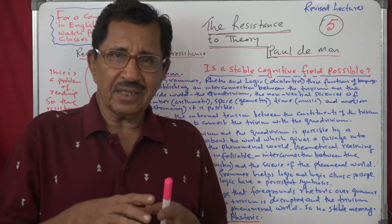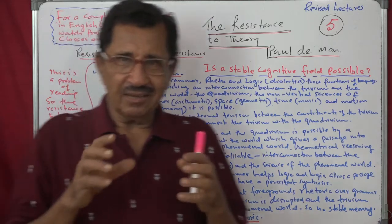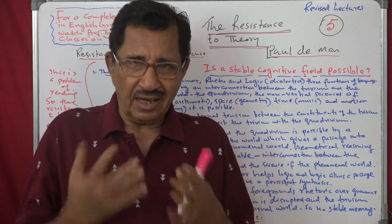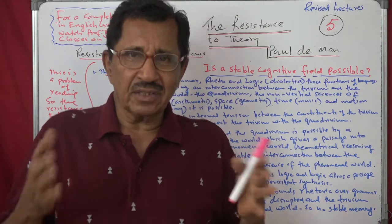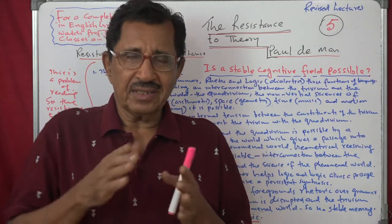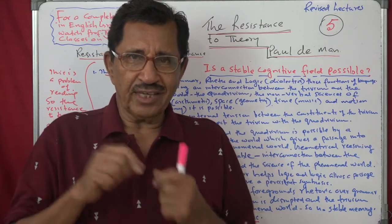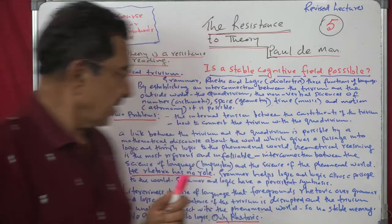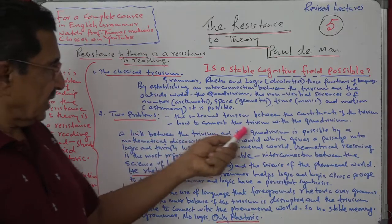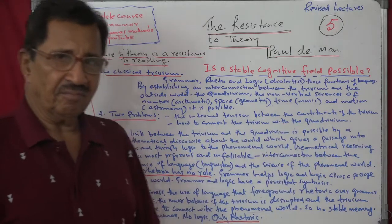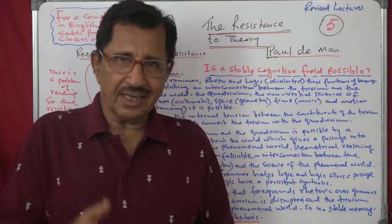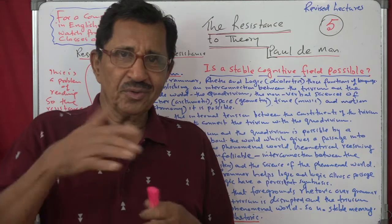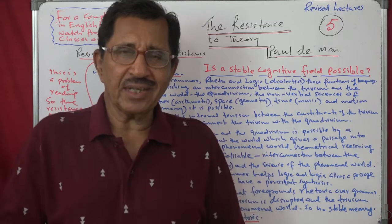Logic and grammar have a very strong relationship — they go together. But rhetoric is not like that. The second problem is how to connect the Trivium with the Quadrivium. There should be a passage — like a passage to India — from the Trivium to the Quadrivium.